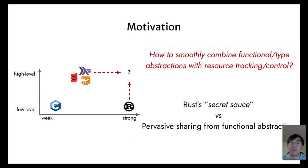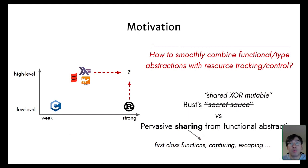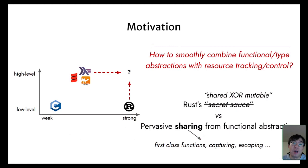However, despite those proposals, there is a more fundamental problem: how to smoothly combine functional and type-level abstraction with resource tracking and control. There is a tension between the secret sauce from Rust and pervasive sharing from functional abstraction. Specifically, Rust's underlying shared-XOR-mutable principle means that if a resource is shared, then it cannot be mutable. On the other side, in higher-order programming we use first-class functions everywhere, and these functions can capture things from their defining environment. If we have multiple functions defined in the same scope, they will naturally share the same environment and resources defined in it. These functions can also escape from their defining scope, making it even more challenging to track how resources are used.